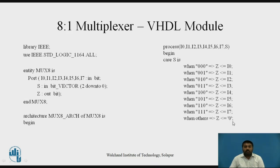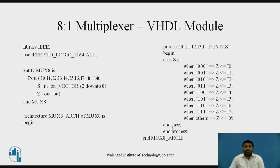That default assignment is optional — you can assign Z to 0, or keep it as Z, or assign 1, as per your requirement. Once done with all the cases, write end case, then end process, and then end architecture with the architecture name. This completes the VHDL module for the 8-to-1 MUX multiplexer.